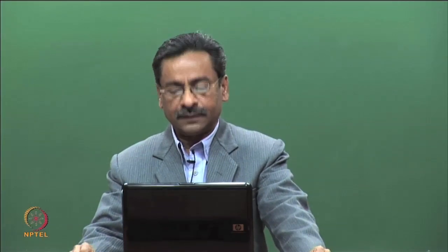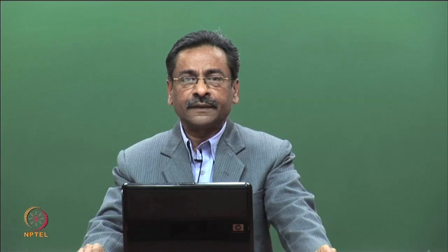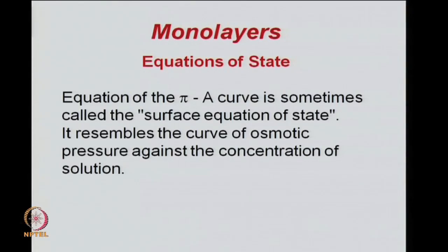By now you have some idea about the monolayers and the kind of apparatus required to study those. The Langmuir trough has been mentioned earlier, and one could make use of measurement of the surface pressure versus area. We deal with the pi versus A curves — the film pressure against the area — which we often call a surface equation of state.